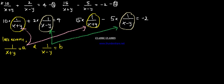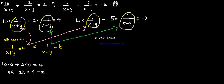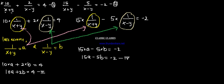After substitution, we will get 10 into a plus 2 into b is equals to 4. So the final equation is 10a plus 2b is equals to 4 — we will name it equation number 3. Similarly for the second, after substitution we get 15a minus 5b is equals to minus 2 — equation number 4.